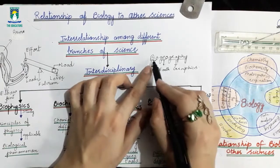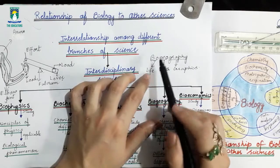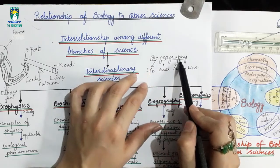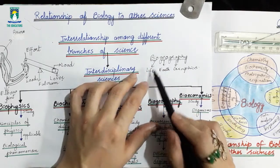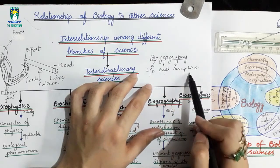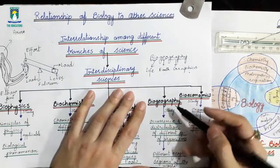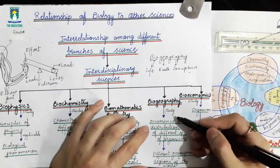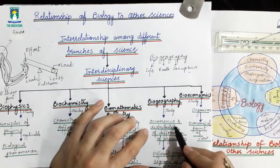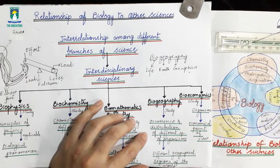If we look at the word Biogeography, it consists of three parts: Bio means Life, Geo means Earth, and Graphy means Graphics or Area. Its definition deals with the study of the occurrence and distribution of different species of organisms in different geographical regions of the world.